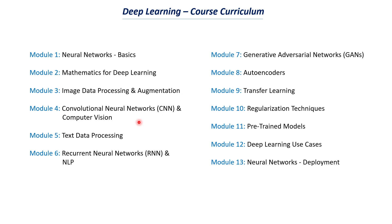In this module, we will learn about the convolutional layers, max pooling layers, and different activation functions that we can use for CNNs, batch normalization, and all those topics. We will also be learning about object detection, semantic segmentation, and a lot more topics on computer vision. There will also be topics covered in transfer learning for CNNs, where I will be explaining how to use pre-trained models for computer vision.